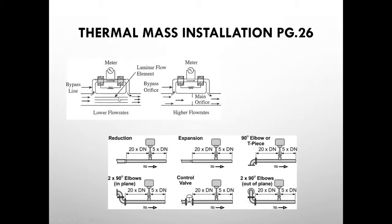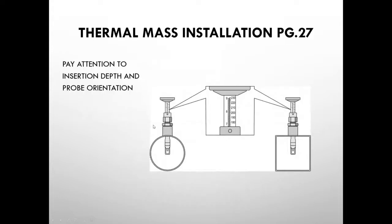Thermal mass installation: there's a low flow rate bypass configuration and a higher flow rate bypass, plus insertion models which are probably more common. Unlike Coriolis meters, thermal ones have piping requirements similar to the other devices we've studied. Upstream requirements are 20 diameters. Similar downstream requirements apply. For insertion style probes, pay attention to insertion depth and probe orientation — the probe needs to be in the center third of the pipe, with correct orientation either perpendicular or parallel to flow depending on the device.